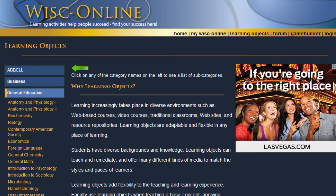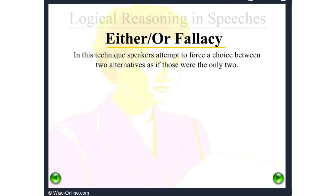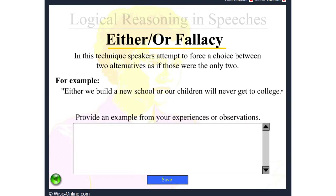This site is a repository of learning objects on just about any concept. For example, an activity on the either-or fallacy explains the fallacy and then will ask students to input their own personal example. The input can then be emailed to the instructor.